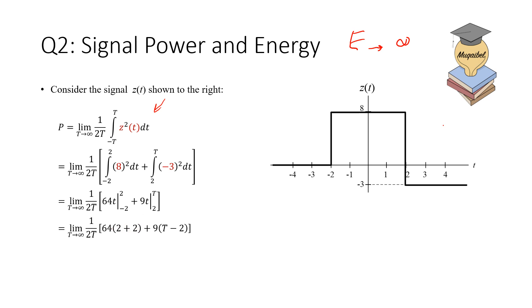So this term is not a problem. This term is not a problem. The only term that would have value is the 9T. Then 9T divided by 2T, which equals to 9/2. So the power for this example is 9/2. Now, if energy is infinity and the power is finite, we call this a power signal. So this is a power signal. I hope also that you got this right. So we'll see you in coming examples.